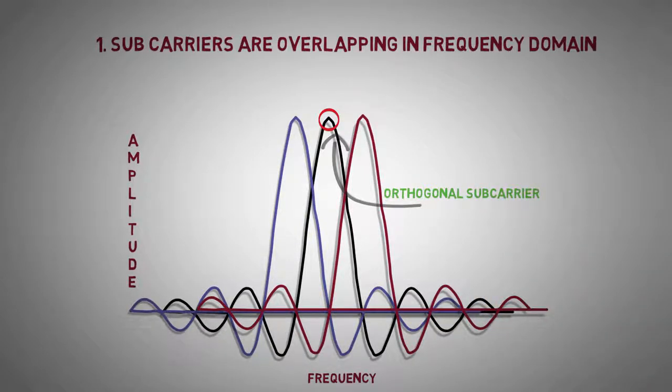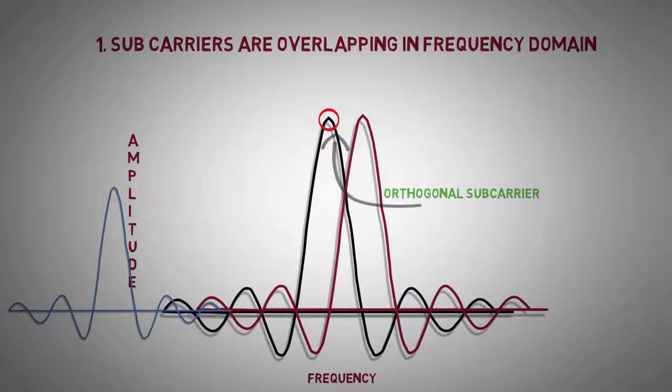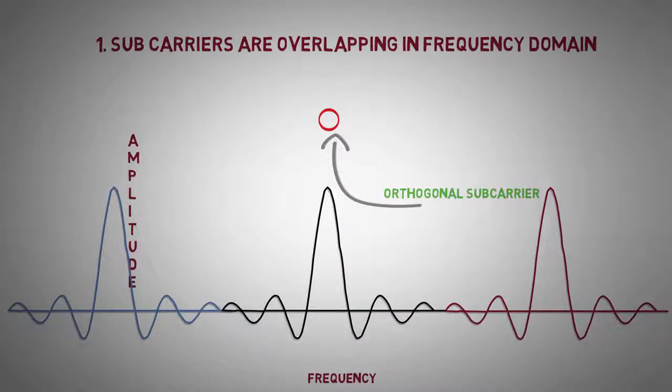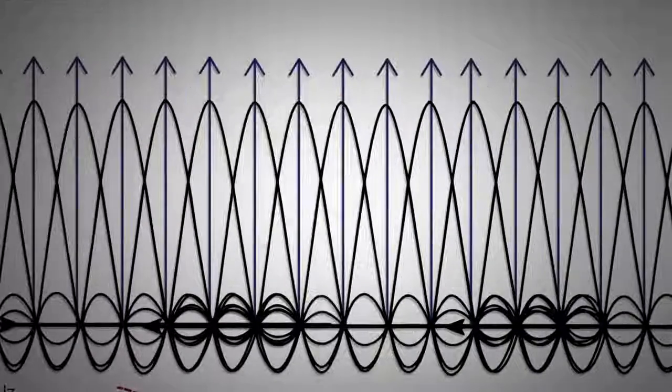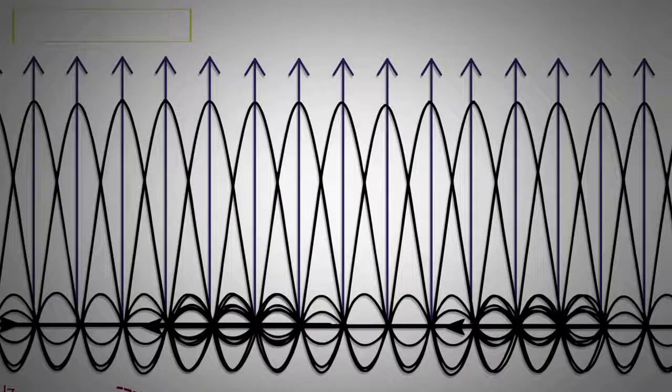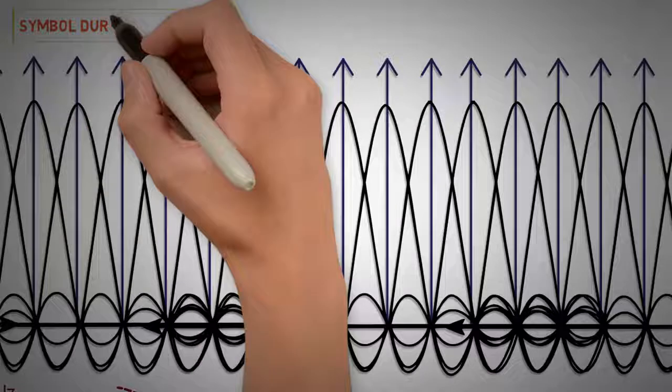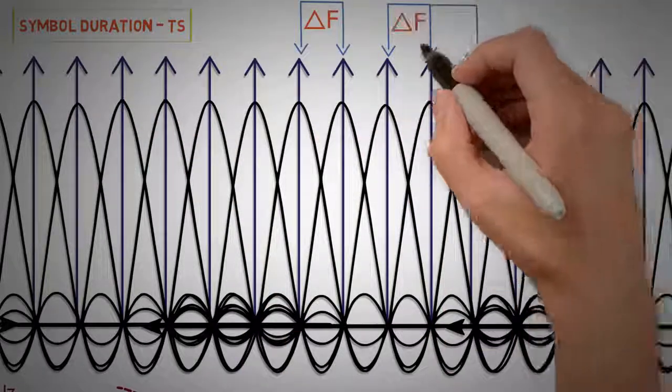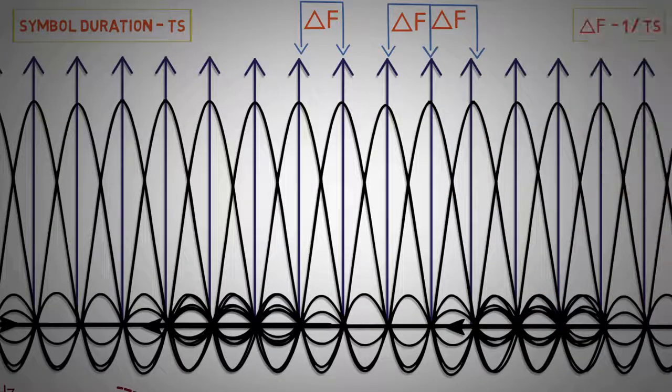As a result, a mobile can sample the frequency and phase without any interference from neighboring sub-carriers. Orthogonality is achieved by ensuring that all the sub-carriers have same symbol duration TS, and the sub-carrier spacing is maintained at delta F equal to 1 by TS.